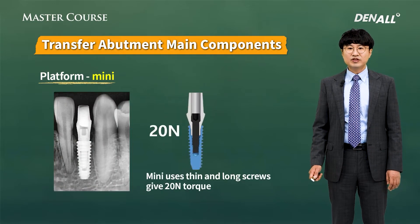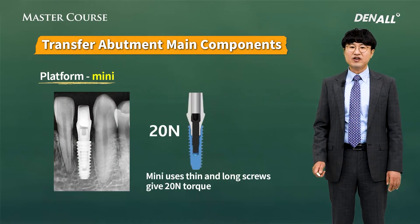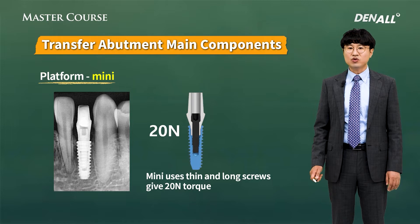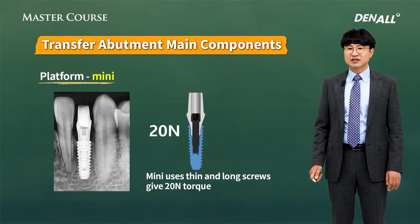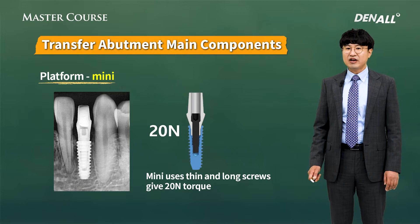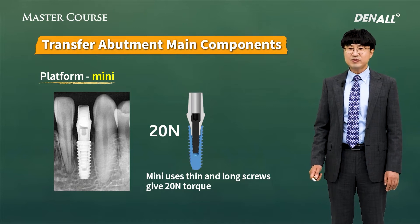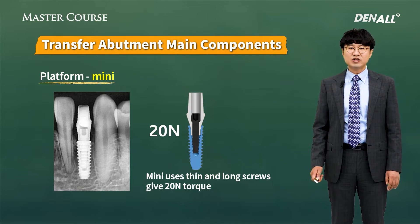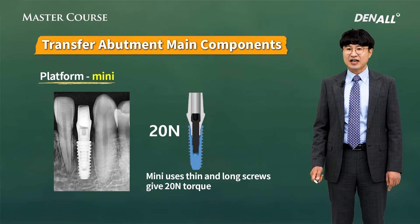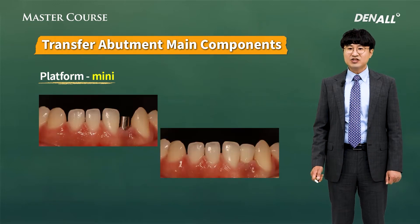For mini platforms, long screws are used with up to 26 Nm torque according to the manufacturer's instruction. For regular platforms, up to 36 Nm torque is used, according to the manufacturer's instruction.